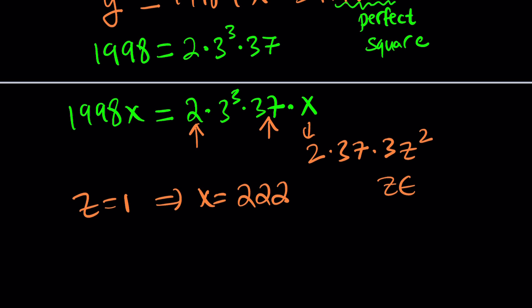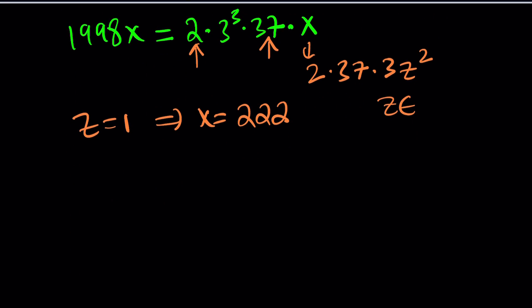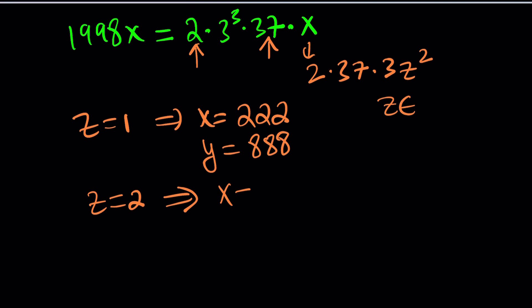Let's look at some values. For example, if z is 1, then x is going to be 222. To find y, you can use the original equation — if x is 222, then y is going to be 888. They're related! What about z equals 2? If z is 2, then x will be 888 and y will be 222. Amazing — they switch, because of symmetry.